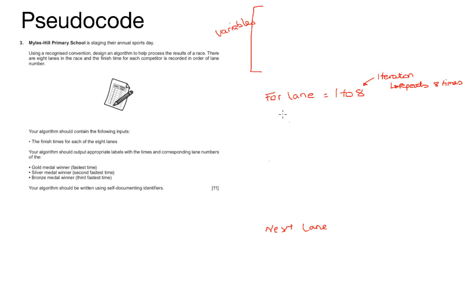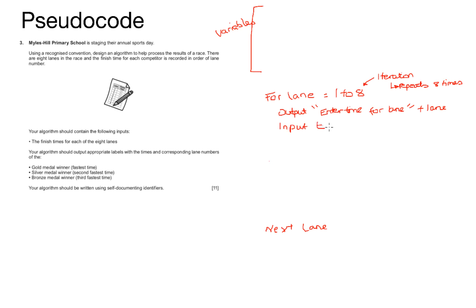Because the question specifically asks me to use labels, I've used an output here to send a message to the user's screen. The message should say 'enter time for lane one' in the first iteration, 'enter time for lane two' in the second, and so on through to eight. The user will then enter the time for that lane. I will then use the time to work out if it's a gold time, a silver time, or a bronze time.